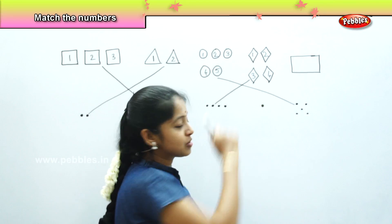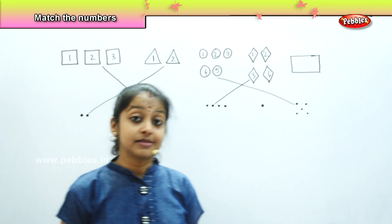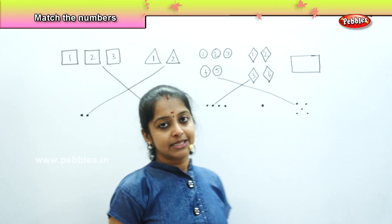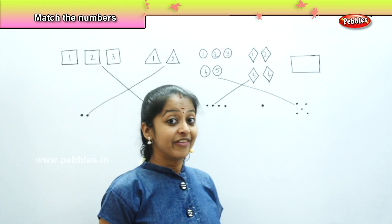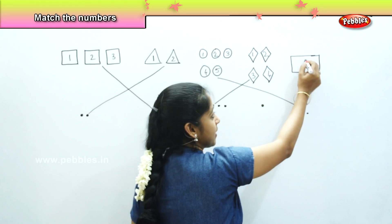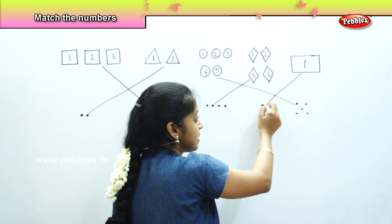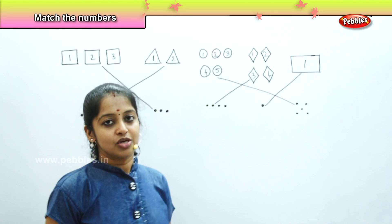So, what is the last object left? Yes. It is a rectangle. Right. So, how many rectangles are there? Very good. There is only one rectangle. And there is one dot over here. So, we will be matching this rectangle with this dot.